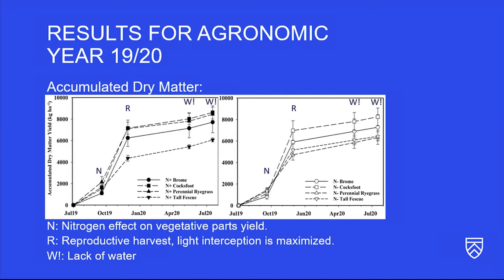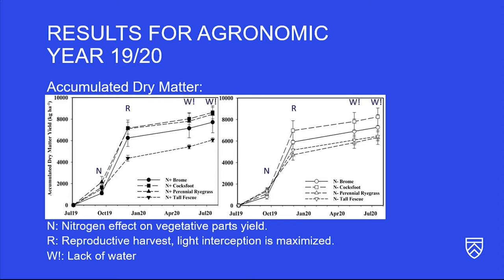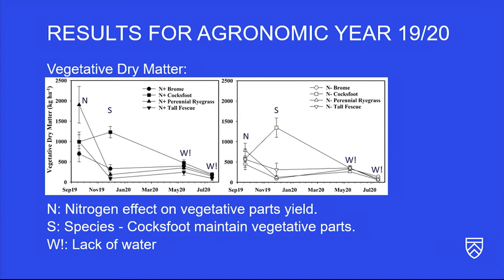We wanted to check what would happen to quality when plants reach that advanced stage, for both the vegetative and reproductive parts, with and without nitrogen. The letter W shows that the increase in accumulated dry matter was very low and marginal because there was a lack of water in the system.